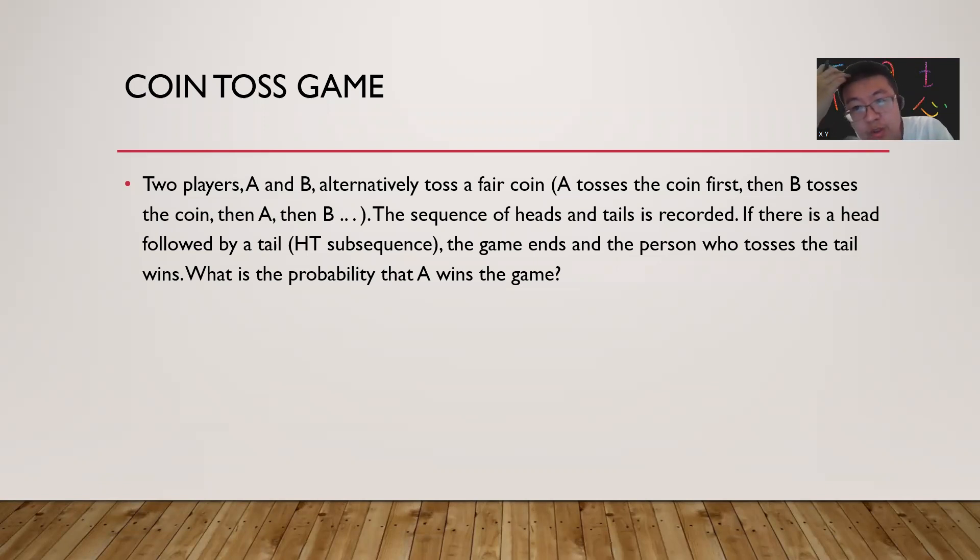Two players A and B alternately toss a fair coin. A tosses the coin first, then B tosses the coin, then A and B. The sequence of heads and tails is recorded. If there is a head followed by a tail, the game ends and the person who tosses the tail wins. So if A tosses H then B tosses T, then B wins.